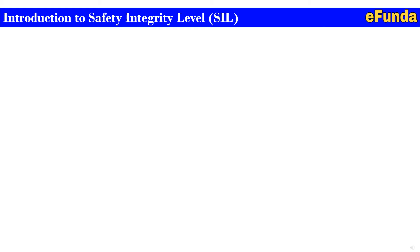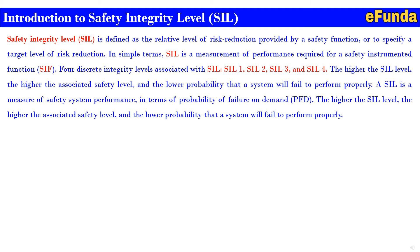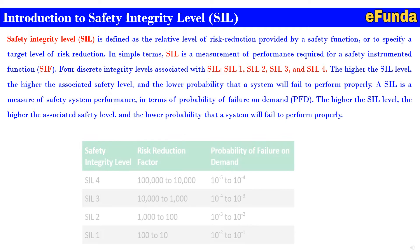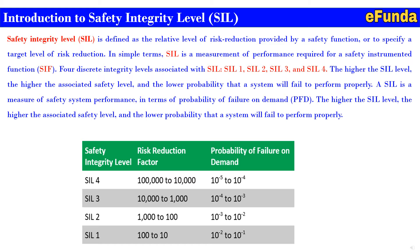Starting our today's video with an introduction to Safety Integrity Level, that is SIL. Safety Integrity Level is defined as the relative level of risk reduction provided by a safety function, or used to specify a target level of risk reduction. In simple words, SIL is a measurement of the performance required for a Safety Instrumented Function, that is SIF. Four discrete integrity levels are associated with SIL: SIL 1, SIL 2, SIL 3, and SIL 4.